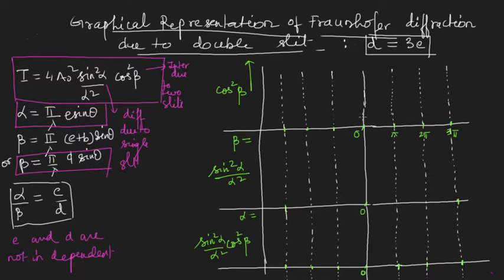Let us first draw only cos²β — this is nothing else but interference due to double slit, so I will get all the maxima of equal height. The cos²β term will have minima at β = π/2, 3π/2, and so on, and maxima at β = 0, π, 2π, 3π. I have drawn these points: at 0, π, 2π, and 3π I get maxima, so all the maxima are of equal height.